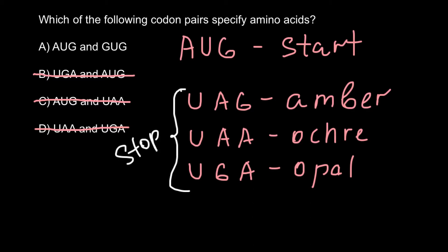Answer A has the AUG sequence, which is the start codon and also specifies the amino acid methionine. The second codon is GUG. We don't have this sequence in our list of stop codons, which means it should specify one out of 20 amino acids. So we can choose answer A as the correct answer — both codons specify one out of 20 amino acids each.